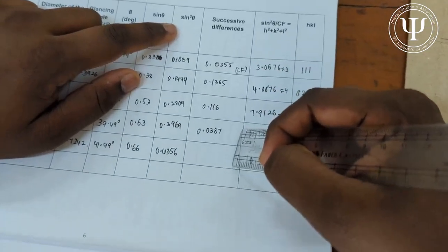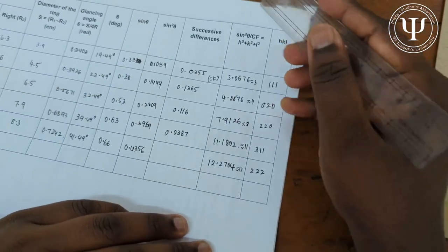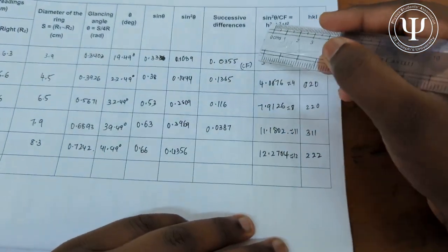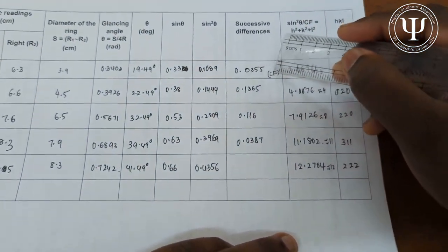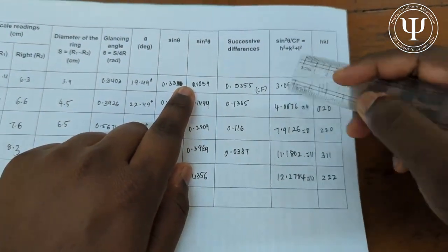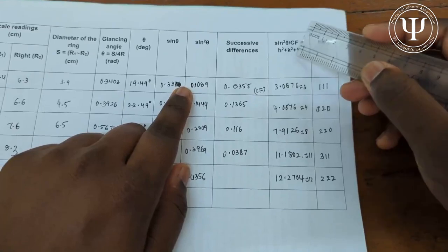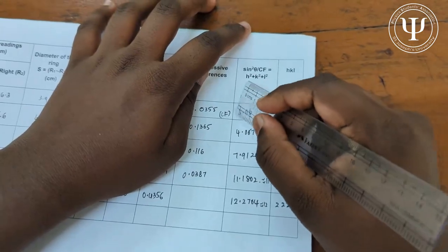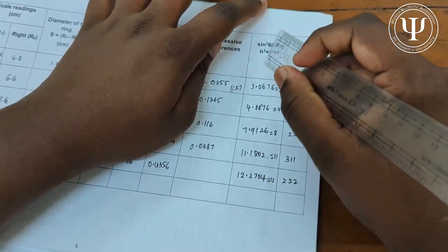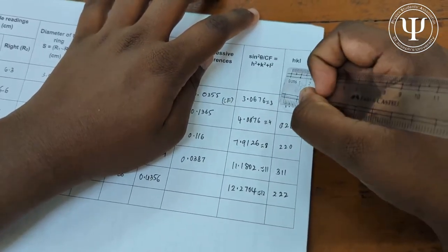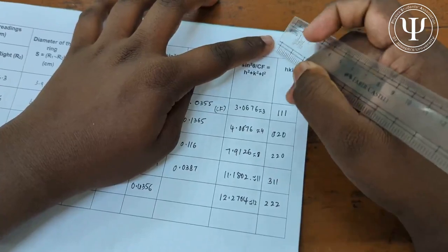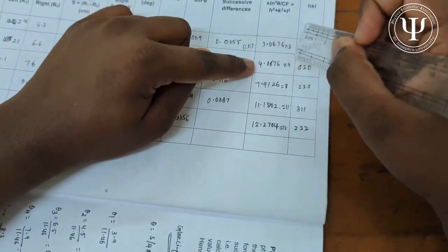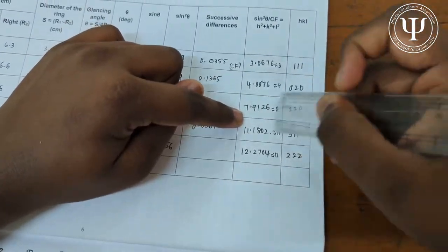The least value among those four successive differences is the common factor. Divide each sin²θ value by the common factor (0.0355) to obtain h² + k² + l² for each arc. Round each result to the nearest whole number: for example, a value of 3 corresponds to the (111) plane since 1² + 1² + 1² = 3. Use this method to find all the Miller indices.